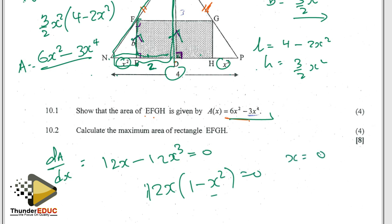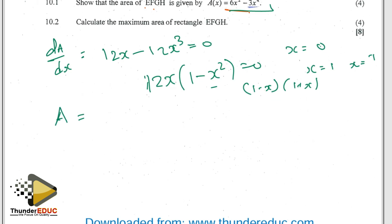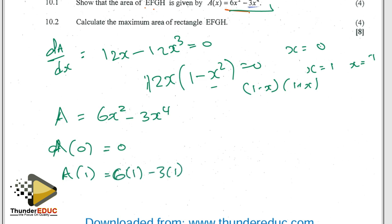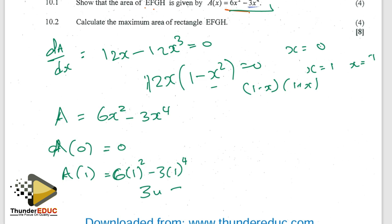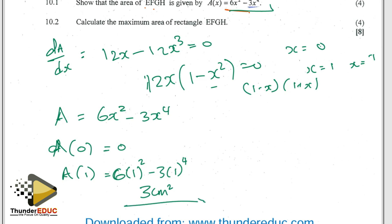Factoring further: 12x(1 − x)(1 + x) = 0, giving x = 0, x = 1, or x = −1. The question wants the maximum area, so substituting these into A = 6x² − 3x⁴: for x = 0, A = 0; for x = 1, A = 6(1) − 3(1) = 3. For x = −1 we get the same result. Therefore, the maximum area is 3 square centimeters.